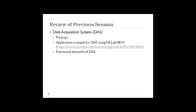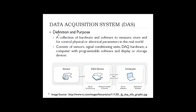So we defined the purpose of the data acquisition system using NI LabVIEW software in the last video. A PowerPoint presentation describing the functional elements of the data acquisition system was also shared. The contents include a definition and purpose of the data acquisition system. It is a collection of hardware and software to measure and store the physical parameters of the real world. It consists of sensors, signal conditioning units, data acquisition hardware, a computer with programmable software, and display and storage devices.